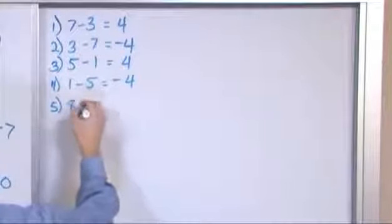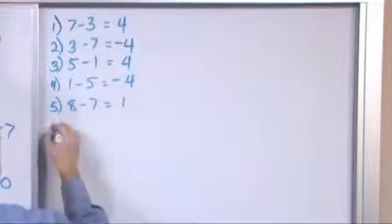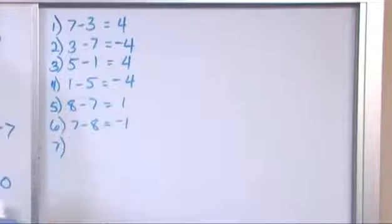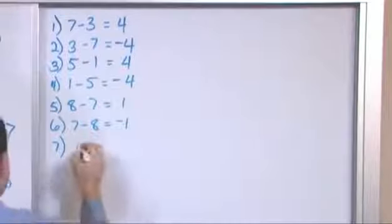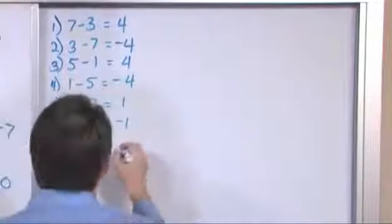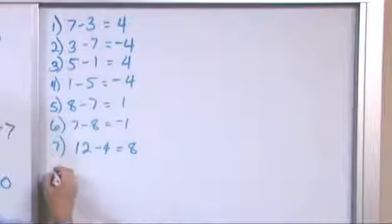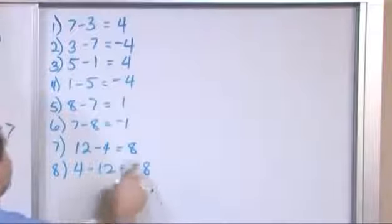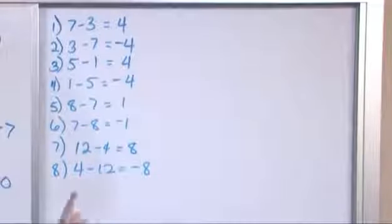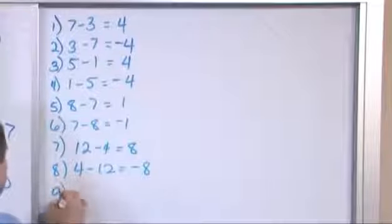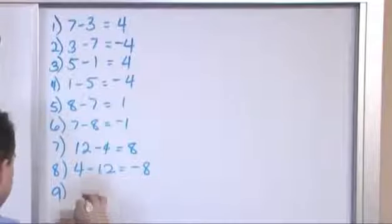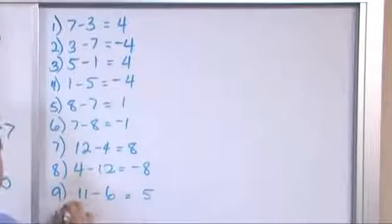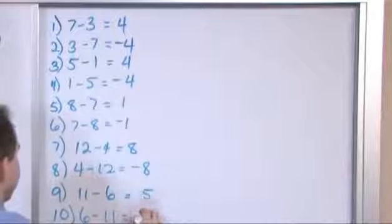So you'll see a pattern to my problems here. 8 minus 7 is 1, and 7 minus 8 is negative 1 — same exact thing. 12 minus 4 is 8, and 4 minus 12 is negative 8. 11 minus 6 is 5, and 6 minus 11 is negative 5.